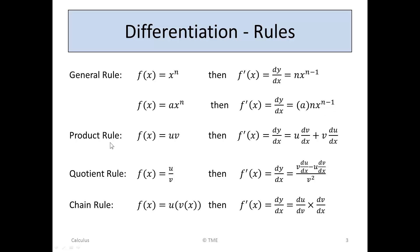The product rule is used when you have two functions u and v, both of them functions of x, and you want to multiply one by the other to give the product. So if f(x) is u·v, then the derivative overall is u times the derivative of the second, dv/dx, plus v, the second function, times du/dx, the derivative of the first.